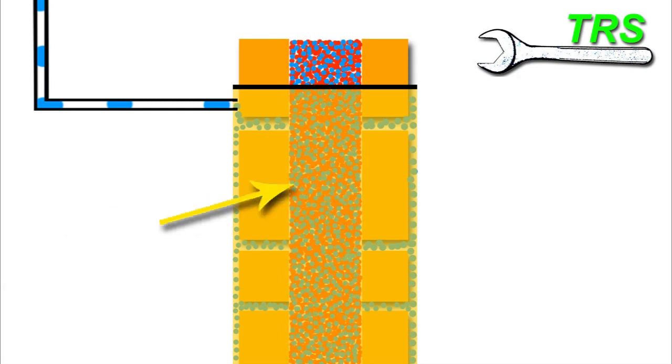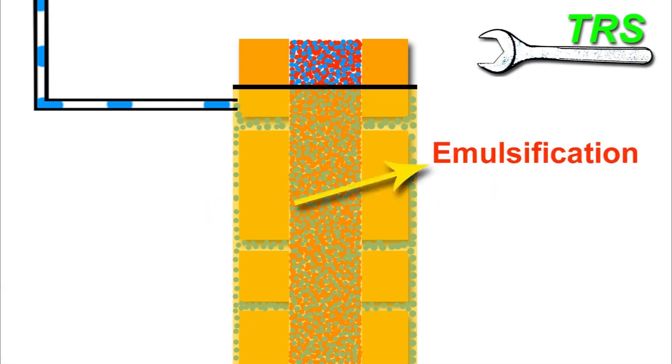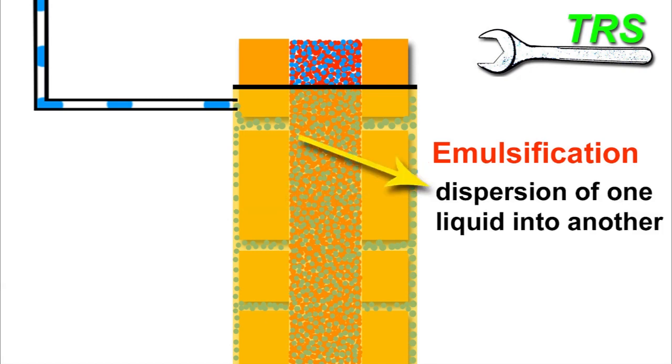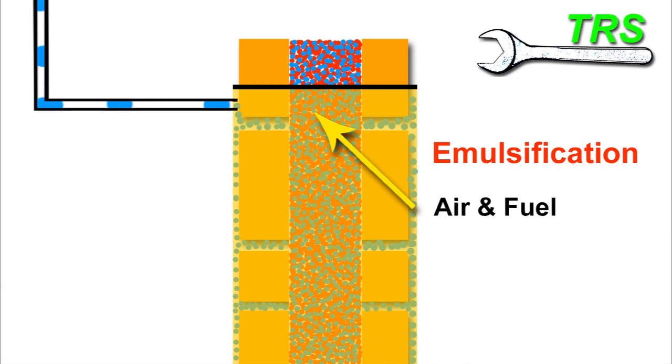And it's this mix of air and fuel here that's referred to as the fuel being emulsified. And it's this area of the main jet that's known as the emulsification tube. And even though the general well-known definition of emulsification is the dispersion of one liquid into another, this is still known as emulsification, even though it's not two liquids. It's air and a liquid.